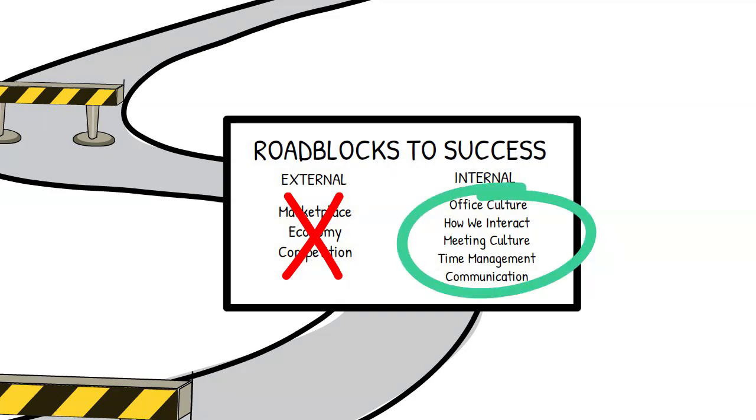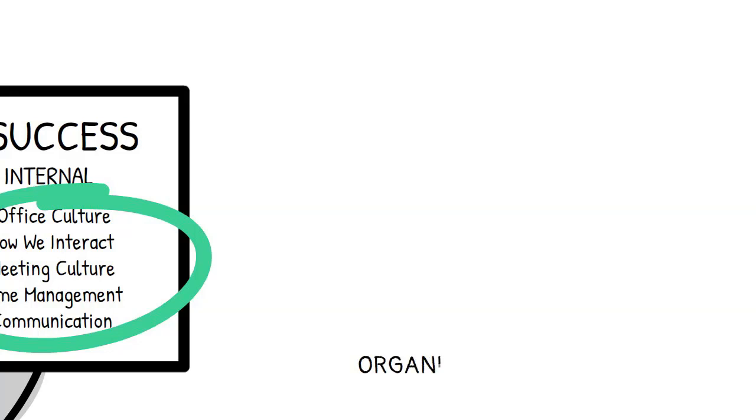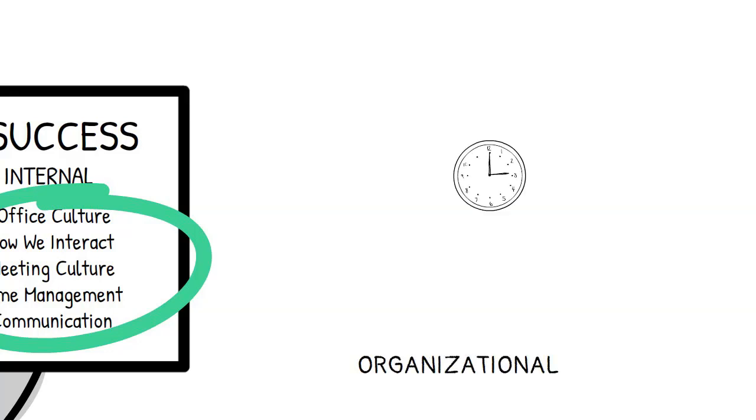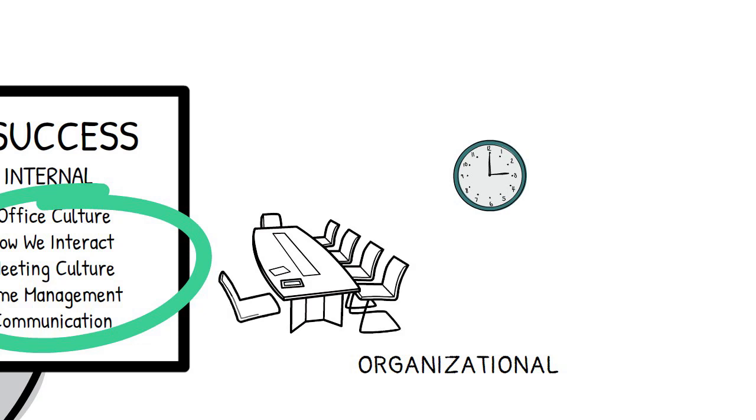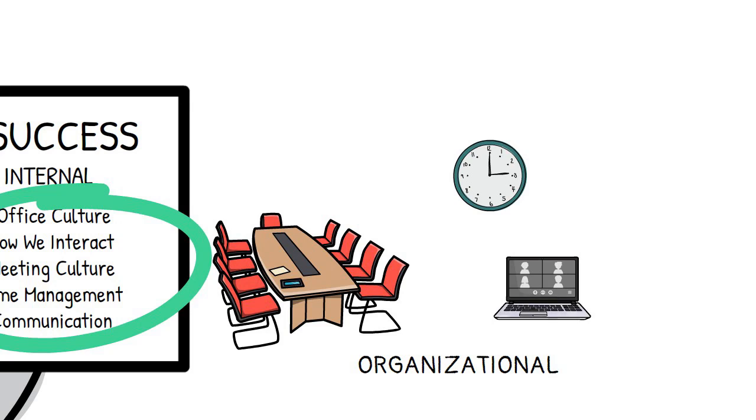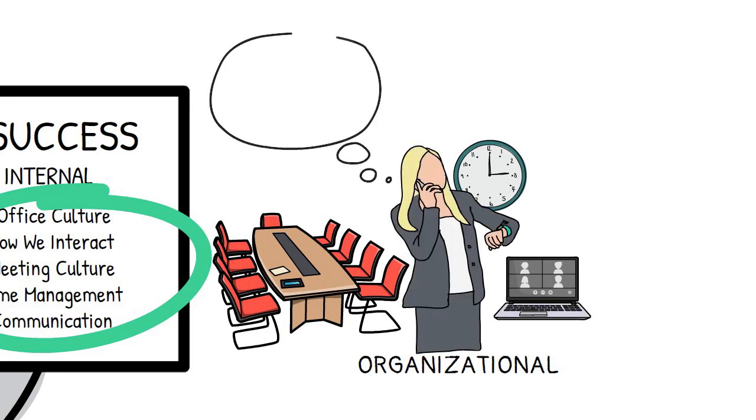And what are the biggest causes of these internal roadblocks? Let's focus on two. The first one is organizational: a culture that doesn't respect time. Too many meetings, too many meetings that run too long. Not enough time given to people to do work, to think, to breathe, to absorb. The meeting culture in most organizations is a significant roadblock to success.